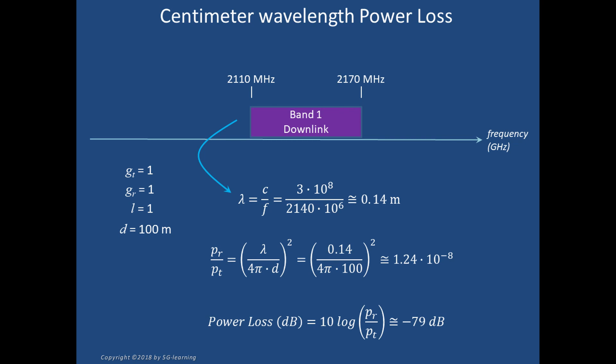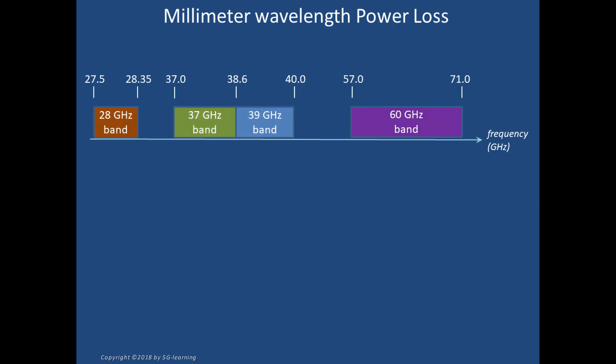Applying Friis equation, we may find the power loss; it amounts to 79 dB. As a second example, consider the 5G millimeter wavelength spectrum region allocated in the United States by the Federal Communications Commission. It includes bands in 28, 37, 39, and 60 gigahertz.